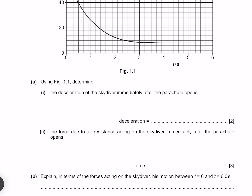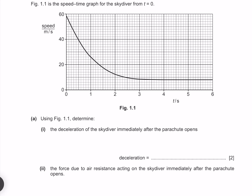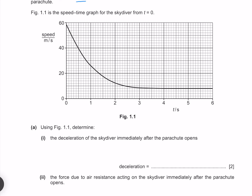Using figure 1.1, determine the deceleration of the skydiver immediately after the parachute opens. Looking at the first section of our graph, we can see we more or less have a linear gradient. The slope of this line gives us the acceleration — specifically our change in velocity, which from 60 to 40 is 20, divided by the duration over which it occurred, which is half a second, giving me 40 meters per second per second.